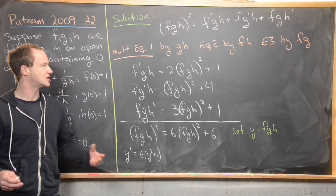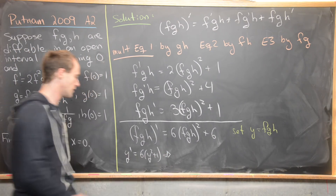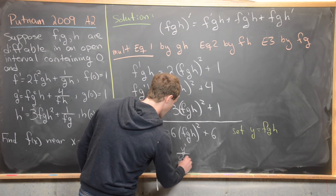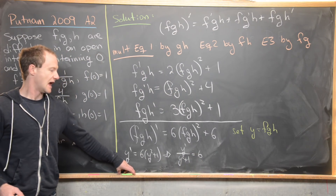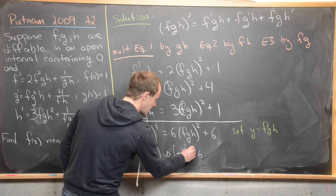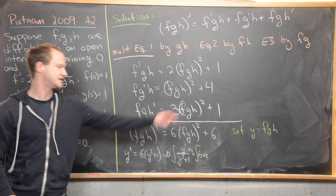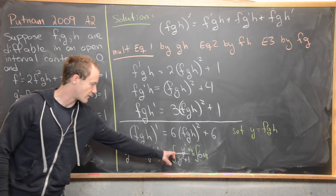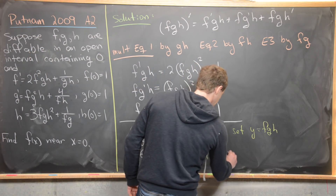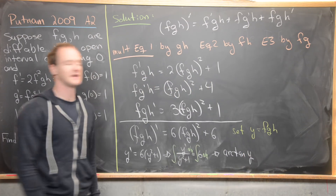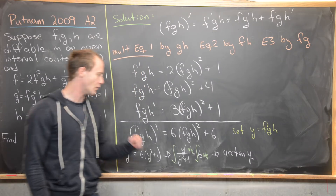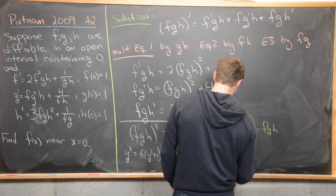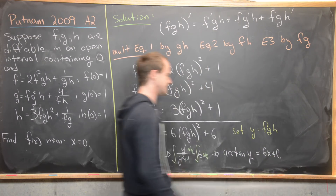We can solve y prime = 6(y²+1) by separation of variables. Writing it as y prime over (y²+1) equals 6, then integrating both sides with respect to x — recognizing y is a function of x so we reverse the chain rule — gives arctan(y) on the left-hand side. We verify: the derivative of arctan(y) is 1/(y²+1) times y prime. The right-hand side integrates to 6x plus a constant C.